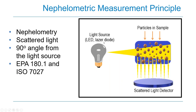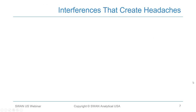EPA Method 180.1 uses white light — typically an LED or laser diode — measured at a wavelength of 400 to 600 nanometers. ISO 7027 specifies infrared light at 860 nanometers ±30 nanometers. In drinking water, readings are derived from a calibration curve established with formazine, and results are expressed in Formazine Nephelometric Units (FNU) used in ISO 7027, or Nephelometric Turbidity Units (NTU) used in EPA Method 180.1.